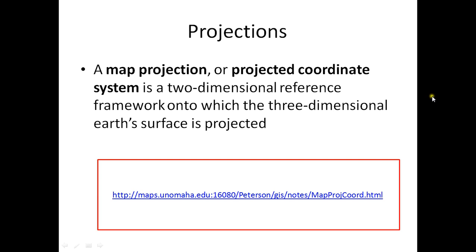So what is a projection? A projection, or projected coordinate system, is a two-dimensional reference framework onto which the three-dimensional Earth surface is projected. First we define the Earth as a geographic coordinate system, then we transform that geographic coordinate system onto a flat surface — that is called a projection.